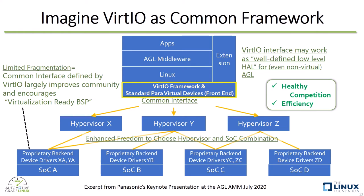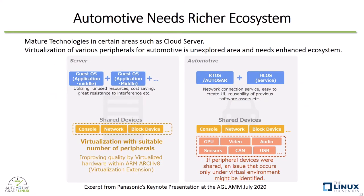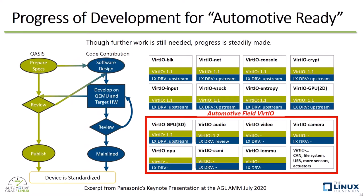Panasonic has been proposing this idea, and this year AGL officially decided to support VirtIO as the common virtualization framework. When we apply VirtIO to automotive systems, we need some more efforts. VirtIO is readily used in cloud servers, but automotive systems need various additional shared devices including GPU, video, audio, sensors, CAN, and so on. Together with us, many companies which also joined the AGL Virtualization Expert Group have been jointly working and contributing to support more para-virtual devices for VirtIO in the open source community.